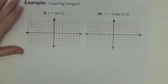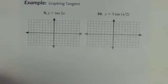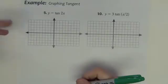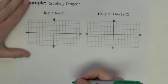Okay, let's look at some examples of graphing tangent. Tangent and cotangent graphs, first of all, they don't have amplitude, so don't look for amplitude like you would sine and cosine graphs.